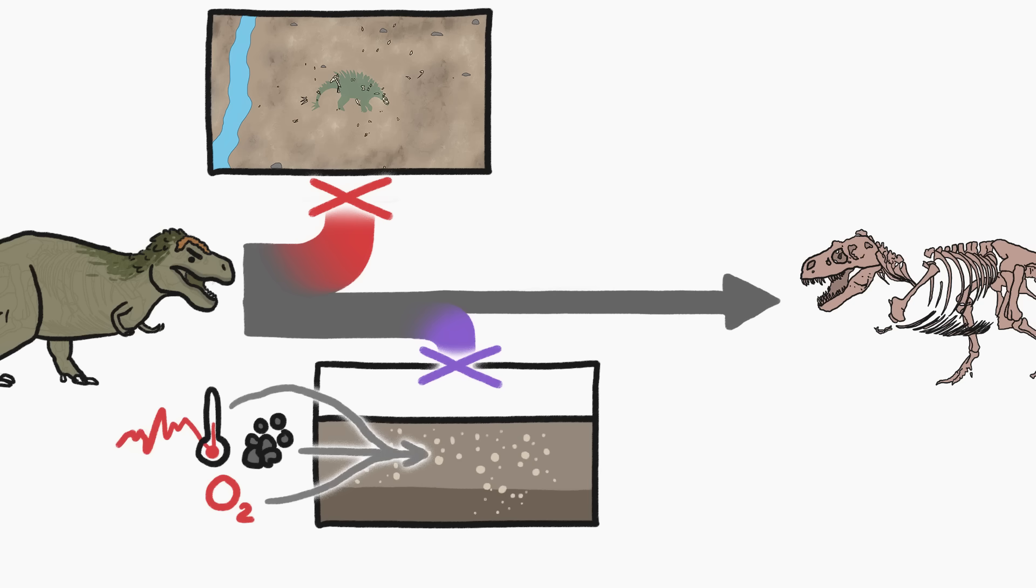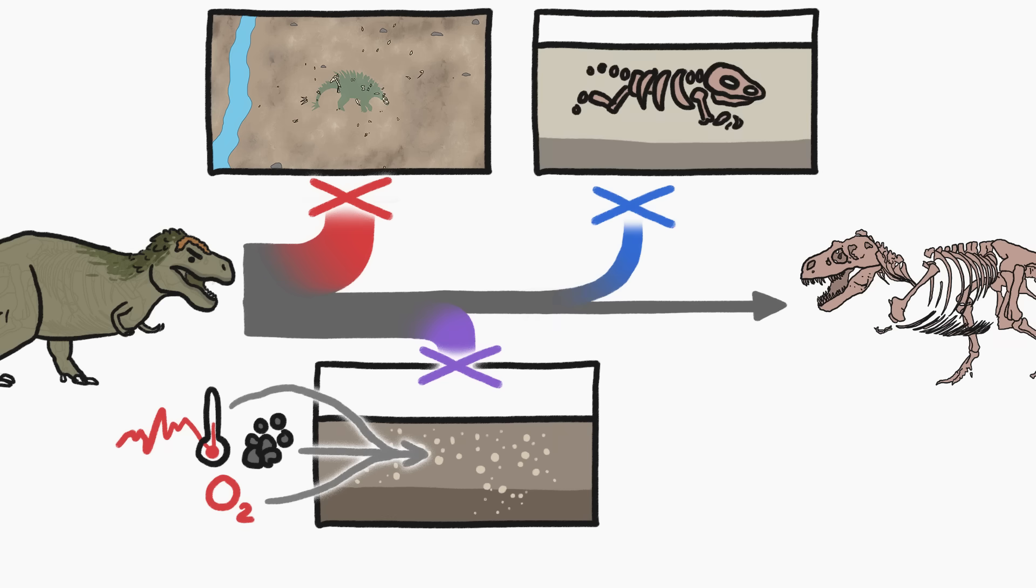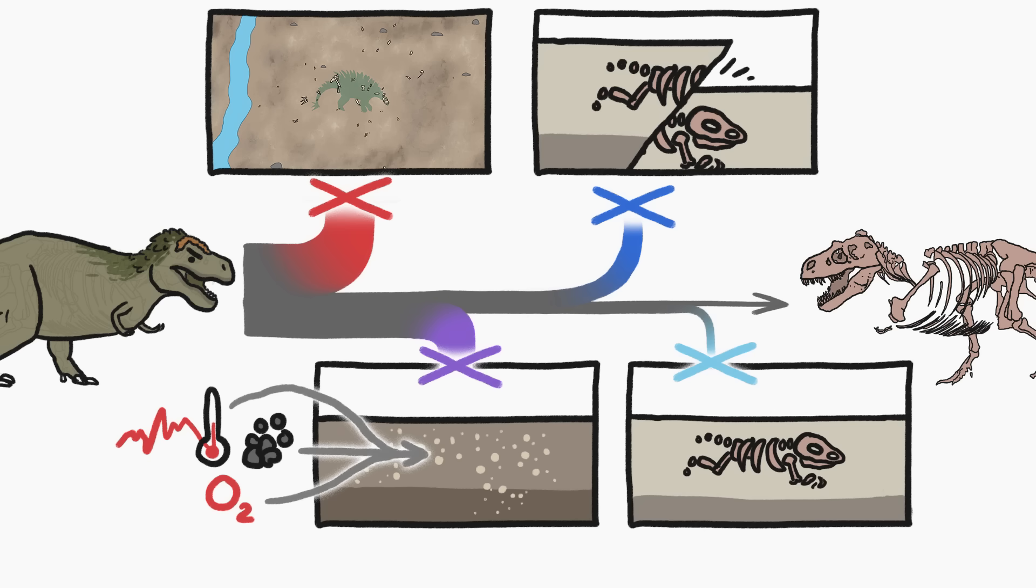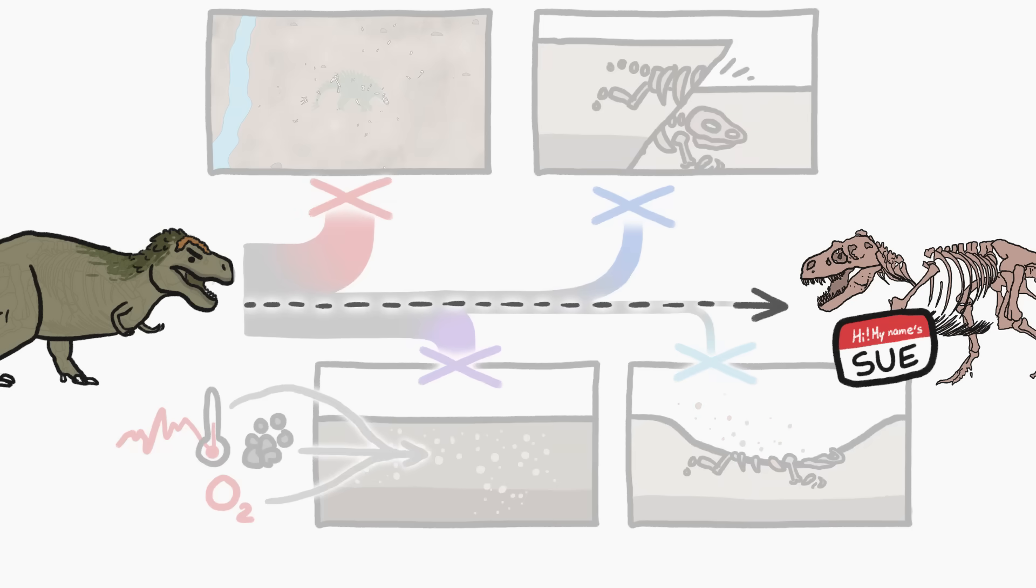Any skeletons that did fossilize still had to make it through tens of millions of years of geological upheaval that shuffled up entire layers of rocks. Even if a skeleton made it complete through all that, it still has to be discovered at the perfect moment in order to stay complete, when there's been enough erosion to expose the fossil, but not enough to weather away big parts of the fossil itself. So even mostly complete skeletons like Sue's are really, really rare.